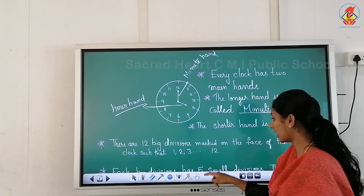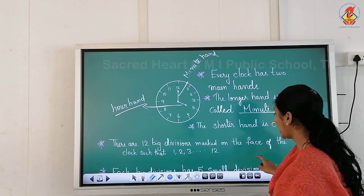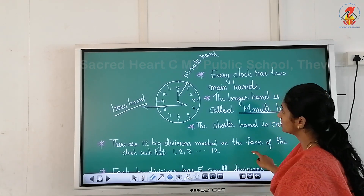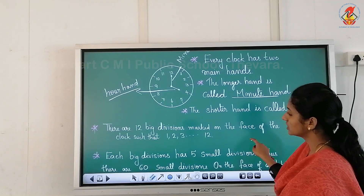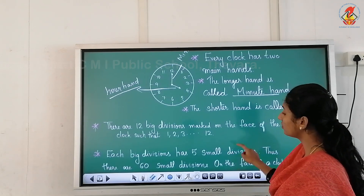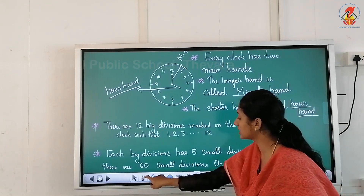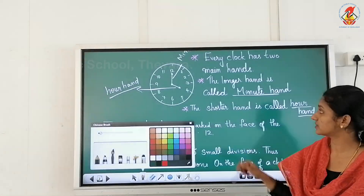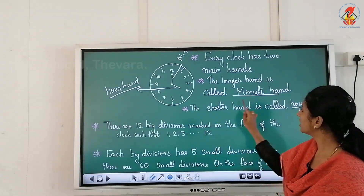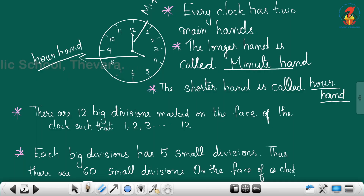Every clock has two hands. The first one is the long hand — the longer hand is called the minute hand. The shorter hand is called the hour hand.